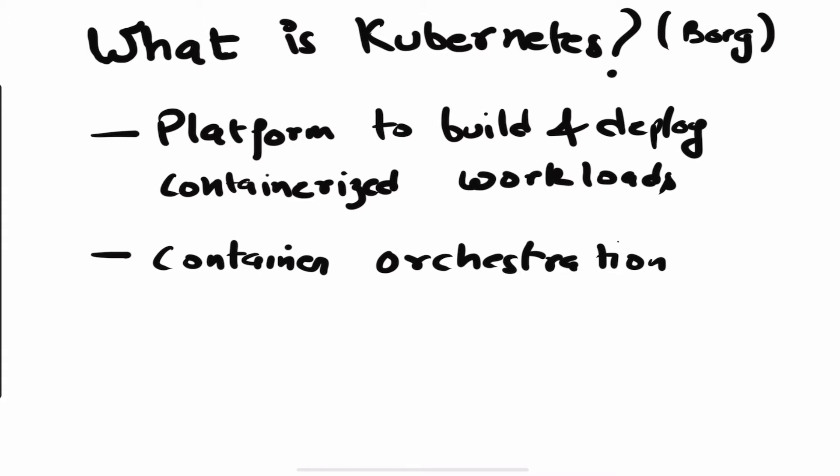In a simple one-line definition, Kubernetes is a platform that you can use to build and deploy your containerized workloads. When I say containerized workloads, that means any workload you want to deploy should be in the form of some container image — it can be a Docker container image, a CRI-O image, RKT, or anything. It has to be a containerized workload; you can't deploy code directly onto a Kubernetes cluster — you have to package it in some form of image.